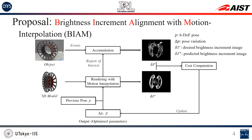We propose the first event-based object tracker: brightness increment alignment with motion interpolation. We generate a desired brightness increment image from events in the region of interest, and from the 3D model and previous pose p, we render the predicted brightness increment image with motion interpolation. Finally, we align the two images and estimate the new pose with the Levenberg-Marquardt method. When these two brightness increment images are the same, we get the correct pose.